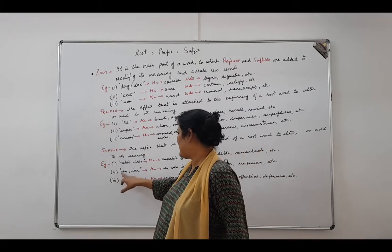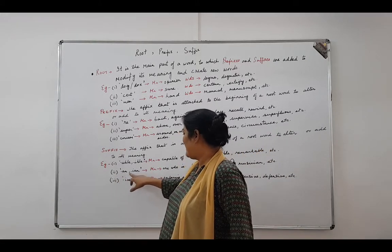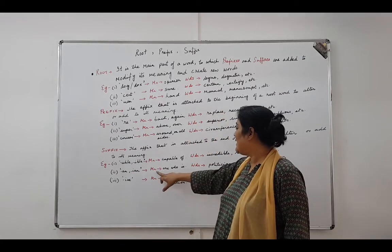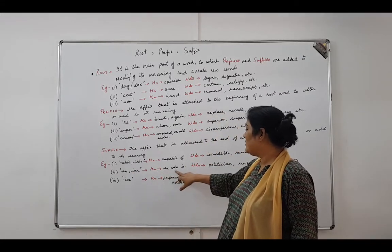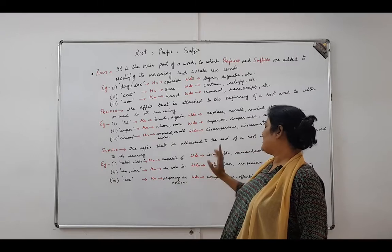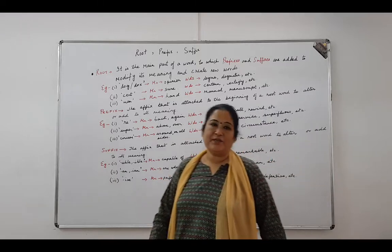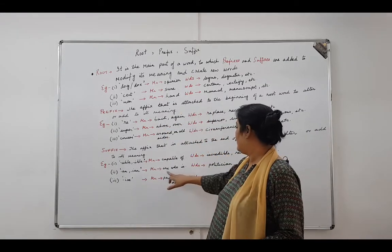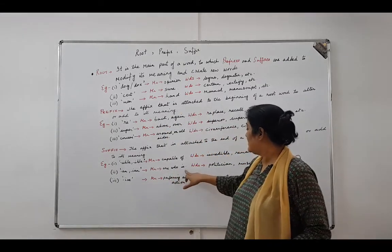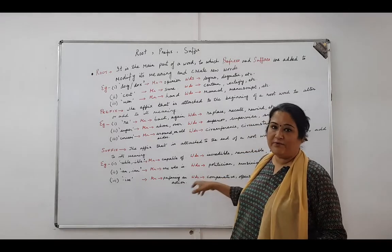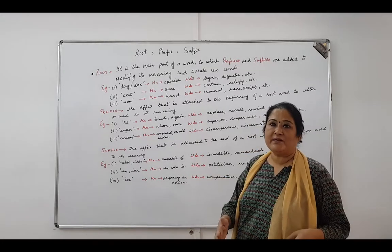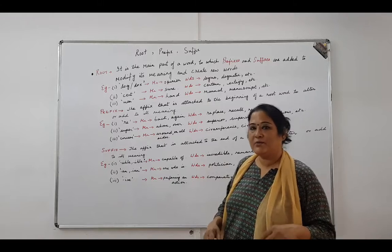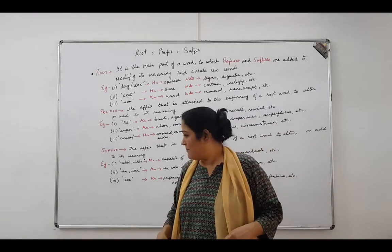Now come to the second suffix: '-an' or '-ian', meaning one who is. The words we have are 'politician' and 'musician'. These are people who are what the words denote. So for instance, a politician is a person who practices politics, and a musician is a person who practices music.